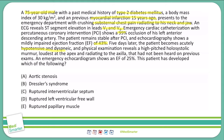The physical exam reveals a high-pitched, holosystolic murmur, loudest at the apex and radiating to the axilla. It has not been present on previous exams. An emergency echo shows an ejection fraction of 25%. The patient has developed which of the following?